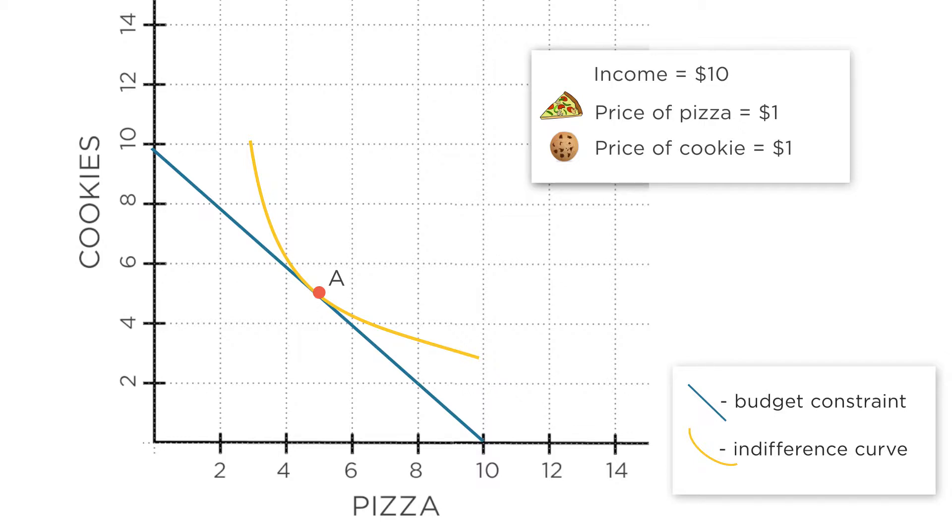Now what happens if the price of pizza jumps to $2 per slice? Your budget constraint rotates inward. Before, if you spent all your money on pizza you could get 10 slices. Now your budget only gets you five slices at most. And as we see, you move to a new bundle point C at a lower indifference curve.